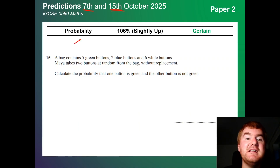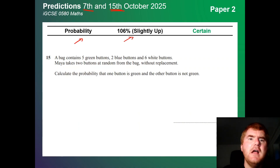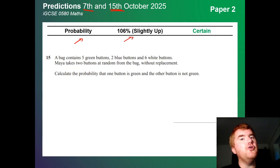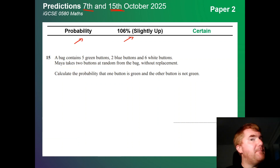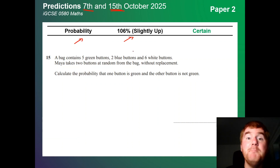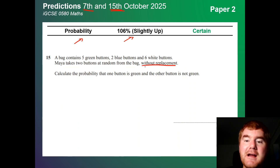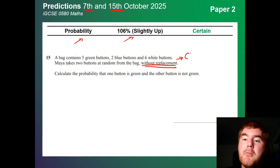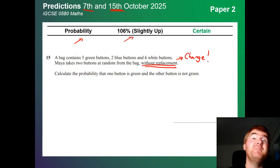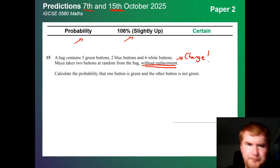Our first topic is probability, slightly up at 106%. Notice we've now got non-calculator and calculator, but they've been putting probability questions into non-calculator as well. Watch out for that phrase 'without replacement' — that's going to change the probability. Keep an eye out for that kind of question. It's often quite a lot of marks, either on Paper 2 or on Paper 4.